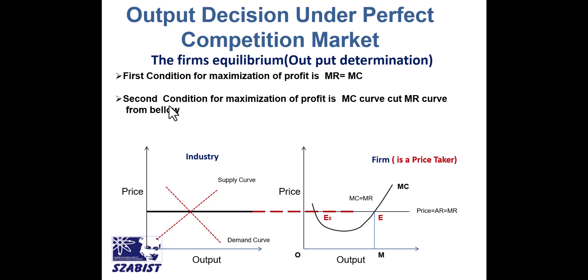The second condition for deciding the maximum or optimum level of output — the point where profit is maximum — is the point where marginal cost cuts marginal revenue from below. These are the two conditions for deciding the optimum level of output.